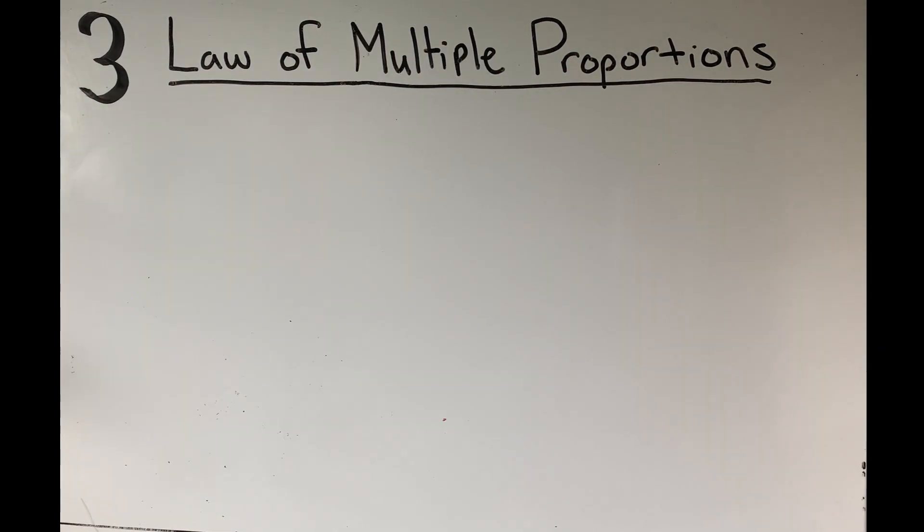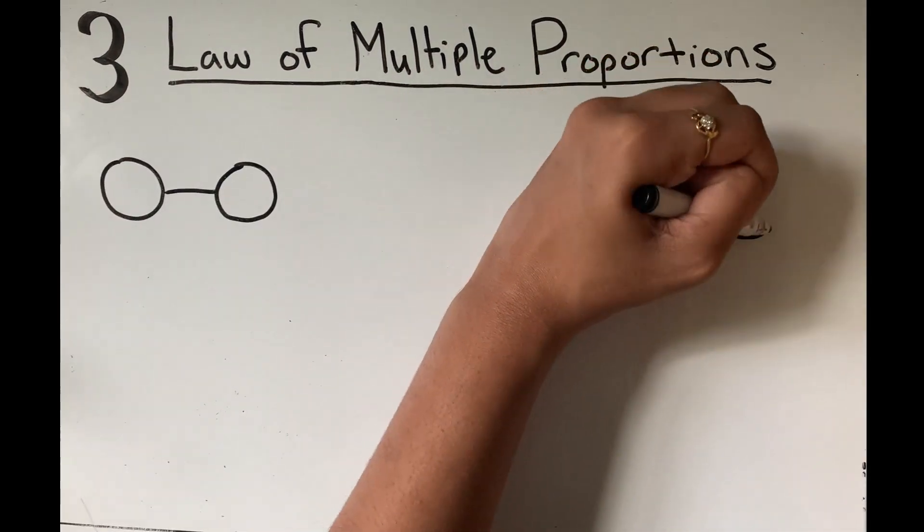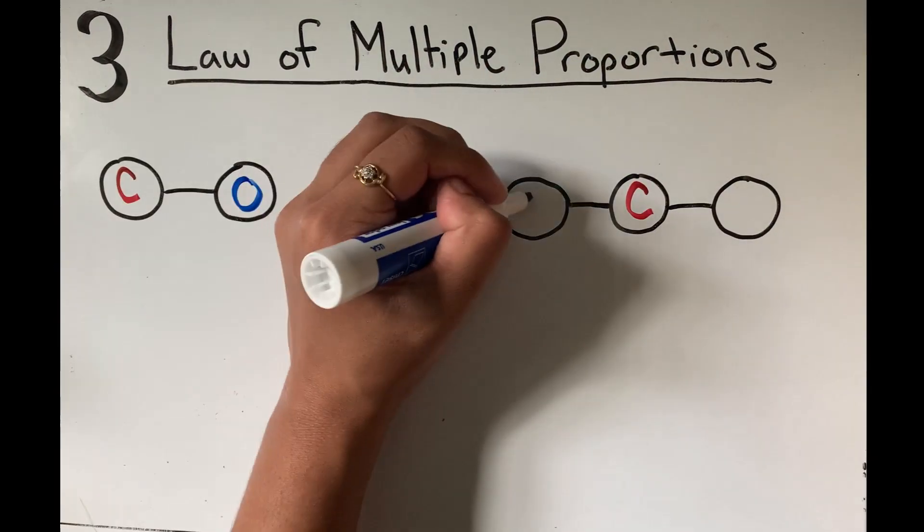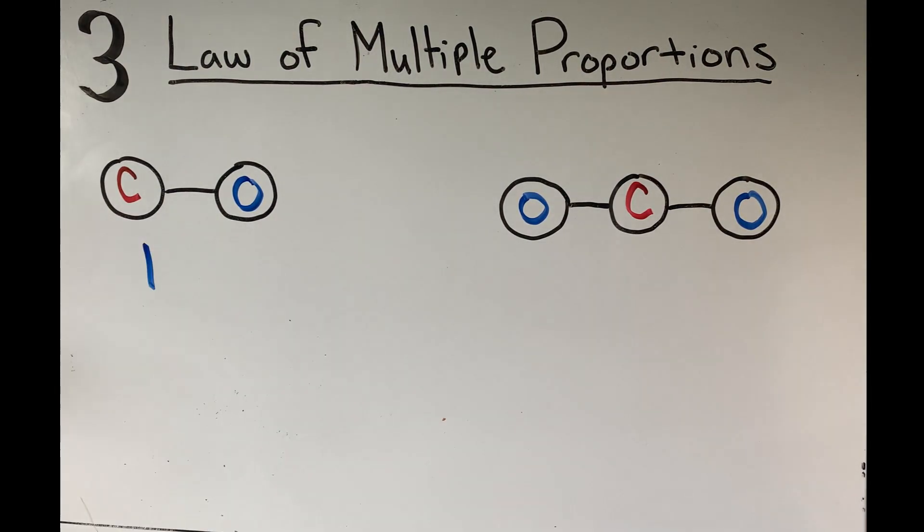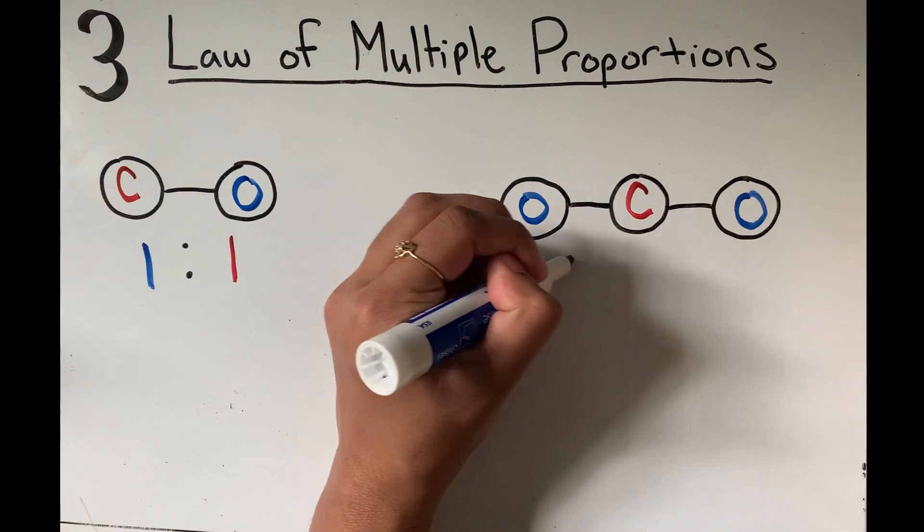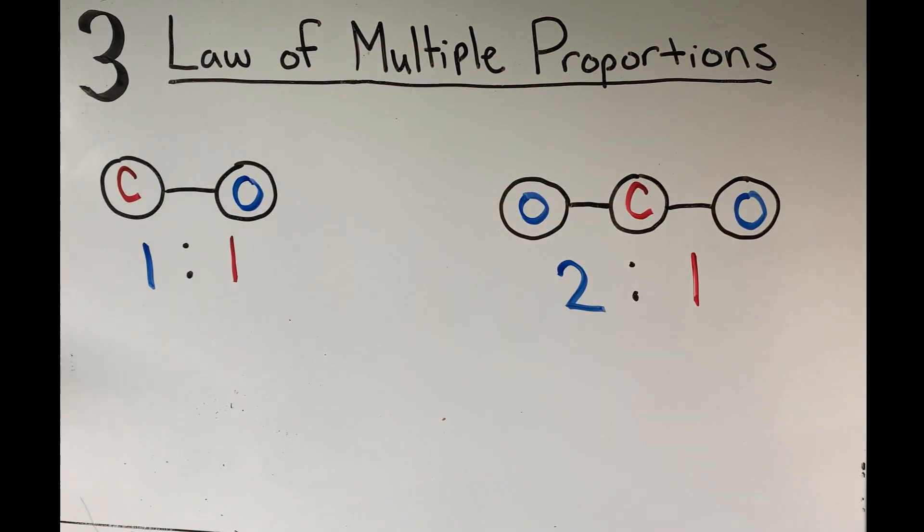The law of multiple proportions can be explained with carbon and oxygen as well. Carbon and oxygen can either bond to form carbon monoxide with one oxygen or carbon dioxide with two oxygens. Since there's one carbon in each, a ratio can be formed between the oxygen atoms.